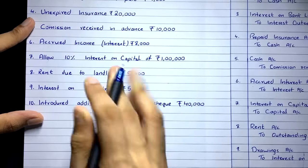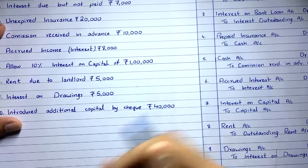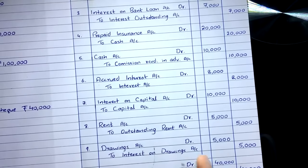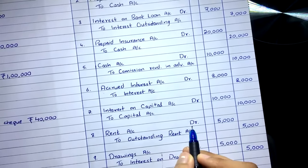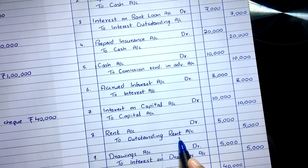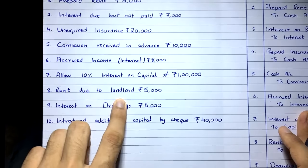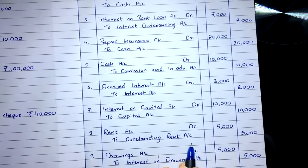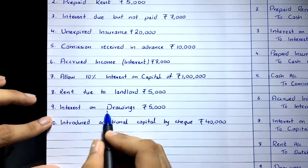Transaction eight: rent due to landlord 5,000. This is an outstanding expense entry. The rent has become due but you haven't paid it, so it's a liability. Entry: rent account debit — expense incurred — to outstanding rent account credit 5,000. Since you haven't paid, no cash account; a liability called outstanding rent account is created. 5,000 debit, 5,000 credit.